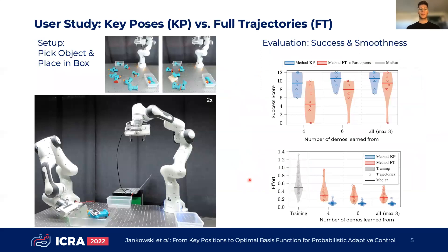We tested the proposed approach within a user study with first-time robot users. We asked two different groups of eight participants to provide key pose demonstrations and full trajectory demonstrations respectively. In both cases, the users are supposed to show how to grasp the object and how to place it in one of the boxes. Given these two sets of collective demonstrations, we then learn our probabilistic adaptive controller for the given task in an offline manner.